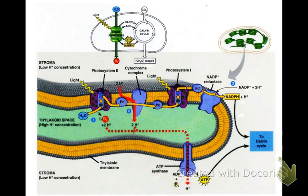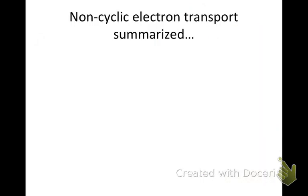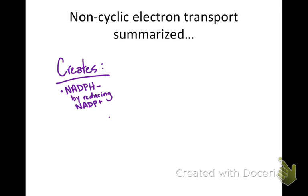ATP and NADPH will travel to the Calvin cycle, which is the topic for the next quiz. This daily quiz only covers the light-dependent reactions. To summarize: non-cyclic electron transport creates NADPH by reducing NADP+, meaning NADP+ gains electrons and becomes NADPH, the reduced form. It also creates ATP through a process called chemiosmosis — pumping protons in and allowing them to flow out through ATP synthase.